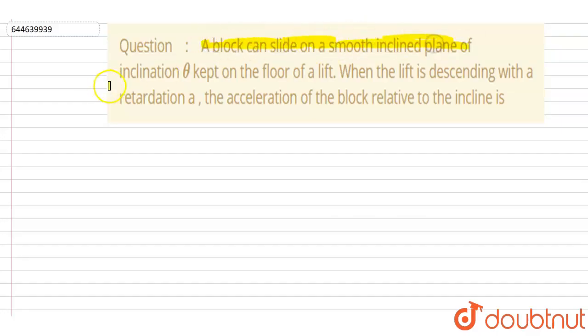A block can slide on a smooth inclined plane of inclination theta kept on the floor of a lift. When the lift is descending with a retardation a, then what is the acceleration of the block relative to the inclined plane? So if you see, it is descending and this a is retardation.